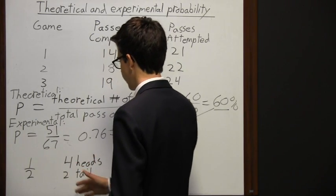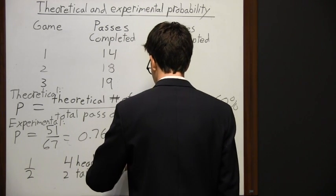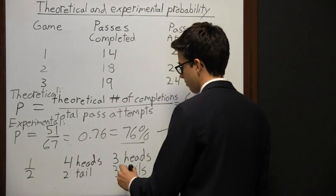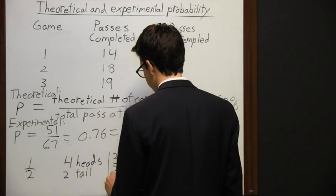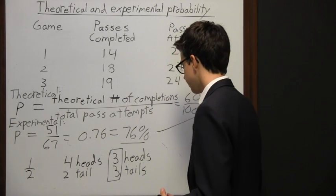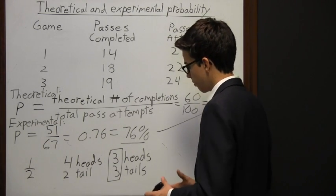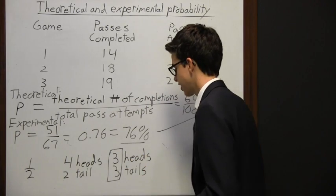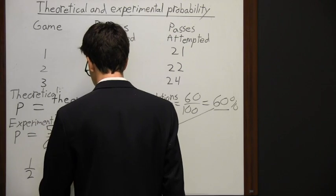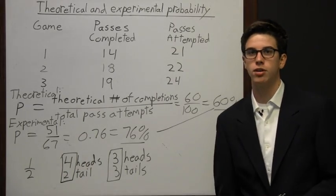For there to be a fifty percent chance of landing on heads, you should have landed on heads three times and tails three times. That is the theoretical probability — when you flip a coin there's a fifty-fifty chance, so flipping six times theoretically yields three heads and three tails. But what actually happened here is the experimental probability: four heads and two tails. That's the difference between theoretical and experimental probability.